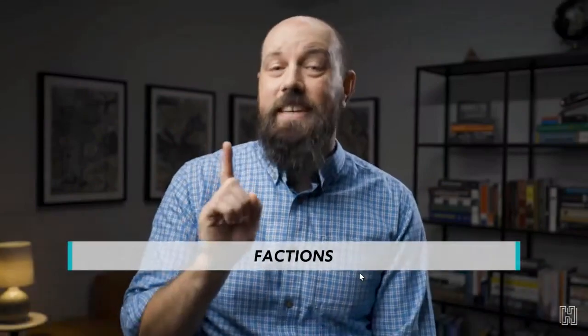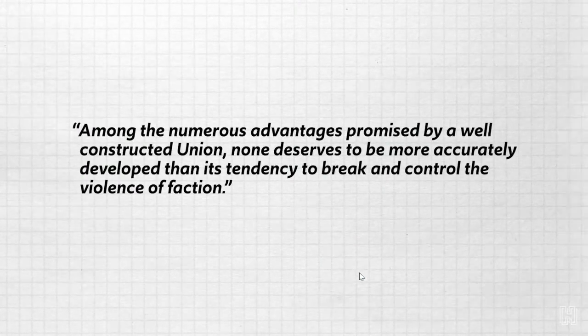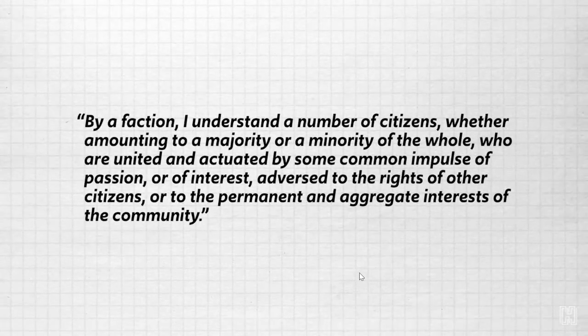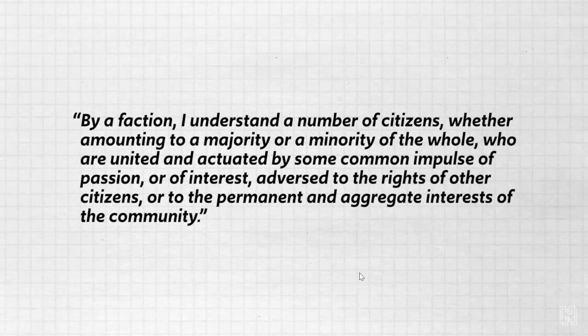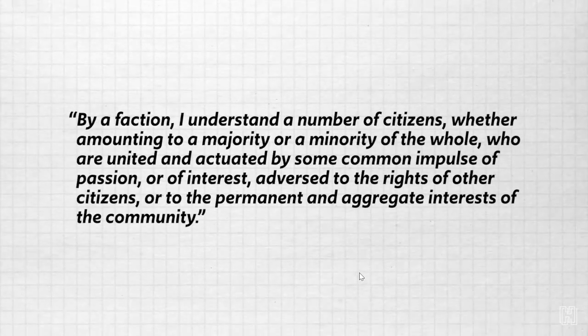Madison comes out talking about the dangers of factions — that is a key word to associate with Federalist 10. He says the union has a tendency to 'break and control the violence of factions.' A faction is a group of citizens — whether a majority or minority — united by some common impulse of passion or interest adverse to the rights of other citizens. In other words, a faction is a group whose desire is to dominate government to impose their own interests on society.